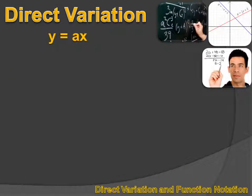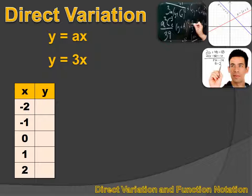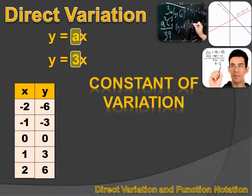A direct variation can be written in the form y equals ax. Here's an example: y equals 3x. If we create a table and put some x values in, we could calculate the y values. The y value would be 3 times the x value. When x equals minus 2, 3 times minus 2 equals minus 6, so y equals minus 6. When x equals minus 1, y equals minus 3. When x equals 0, y equals 0. That 3 that we multiply by x to figure out what y is, that a and that 3 is known as the constant of variation.